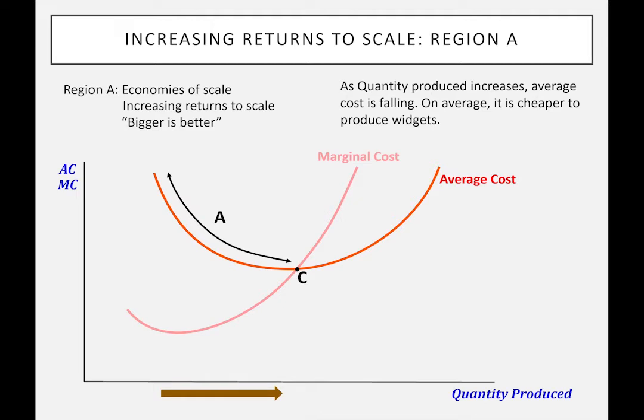Now, there are different measures of this and different ways of looking at it. When it gets more complicated, we've got different inputs. In this case, we're not looking at any specific input. And sometimes returns to scope gets complicated if a firm is producing more than one particular good. Here we're looking at widgets — one good. I'll ignore those distinctions for the moment and just say that when we're in region A, there's economies of scale. Another sense of this is 'bigger is better,' because as the firm gets bigger it can produce a good more cheaply, at lower cost.